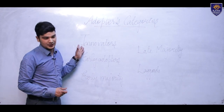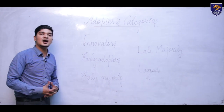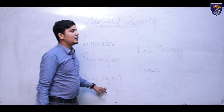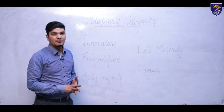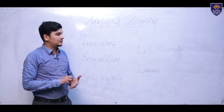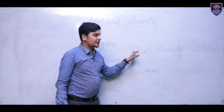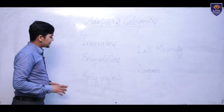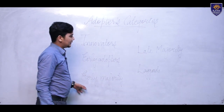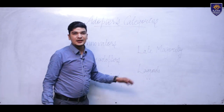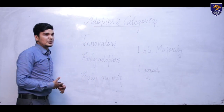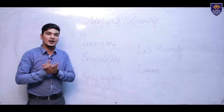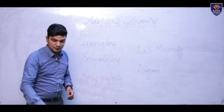Early adopters are those people who usually adopt the latest technology right after the innovators. After that are the early majority, when most people of the society adopt the new technology. The late majority are people who adopt the new technology just after the early majority, and after that come the laggards — the people who adopt new technology last.